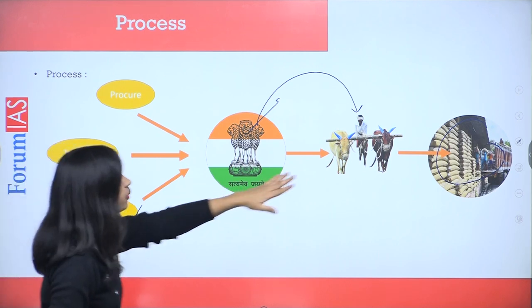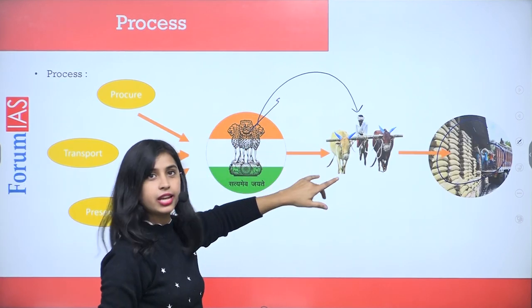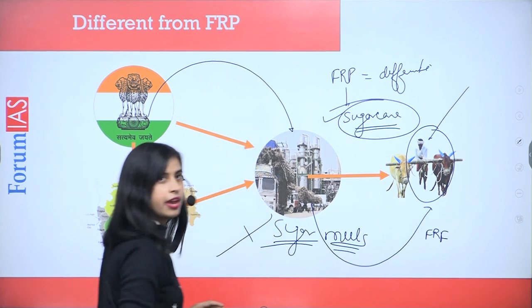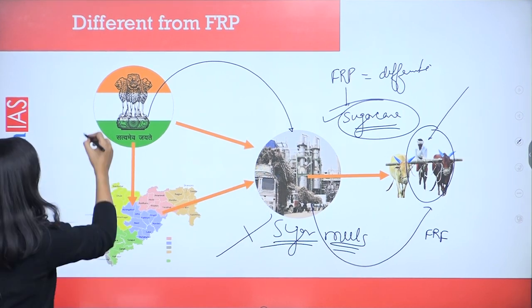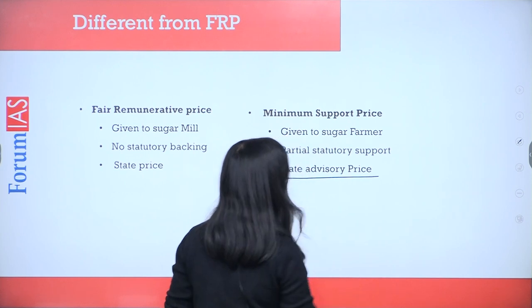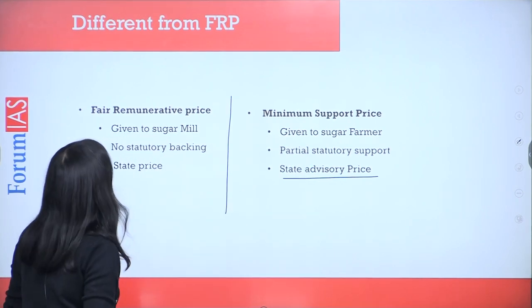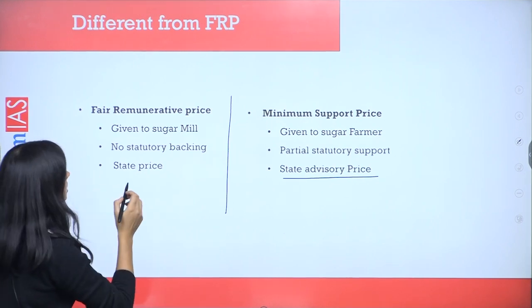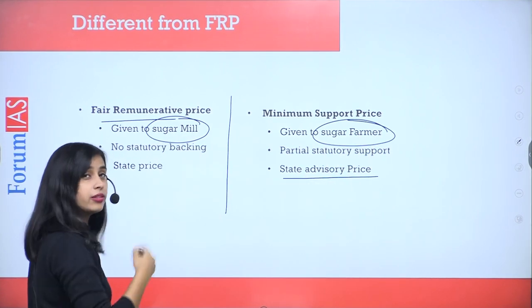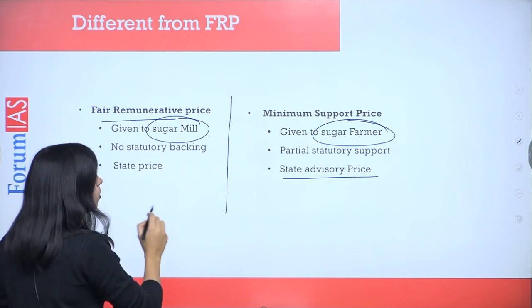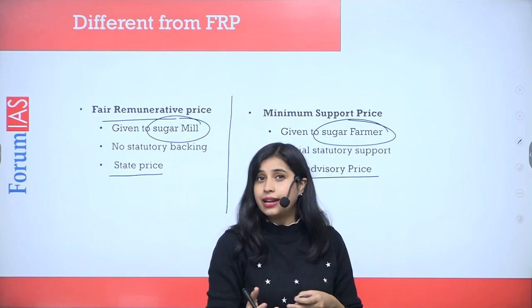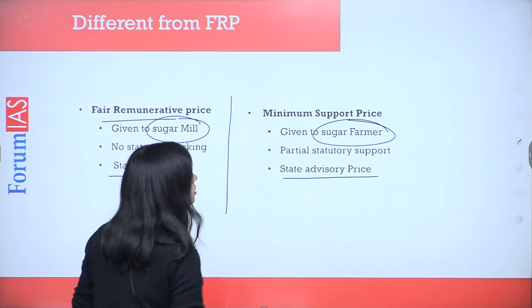This is how MSP differs from FRP: in MSP, the farmer and government have a direct connection. Whereas in FRP, the government includes mills as an intermediary, and the sugar mills then pass on the FRP to the farmer. Keep in mind, the central government can declare MSP, and the state government can also declare prices — in the case of state government, it is called state advisory price. The state advisory price can be higher than the central declared price, in both MSP and FRP cases.